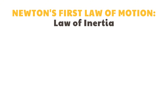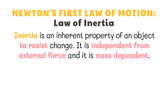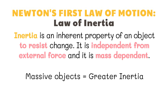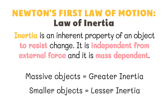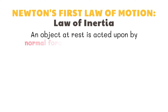The property that resists changes in an object is called inertia. Inertia is an inherent property of an object to resist change. It is independent from external force and it is mass-dependent, meaning massive objects have greater inertia while smaller objects have lesser inertia.